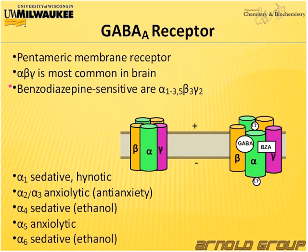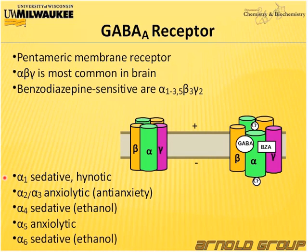These different receptor combinations have an important pharmacological effect, summarized at the bottom of this slide. Alpha-1 is known to modulate sedative and hypnotic effects. If you are looking for an anti-anxiety compound, you would like the benzodiazepine to selectively modulate alpha-2, alpha-3, and alpha-5. If you are looking for a sedative compound, you would like to increase the efficacy for alpha-4 and alpha-6. By dialing in the selectivity towards the different subtypes, we can influence the pharmacological profile of the benzodiazepines.